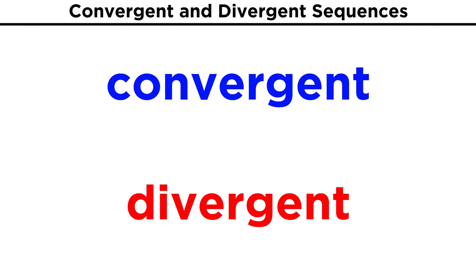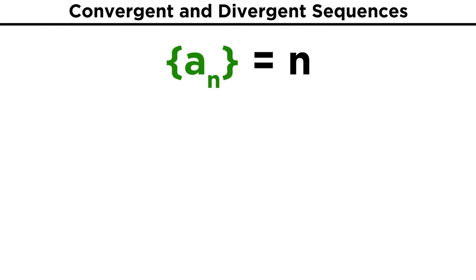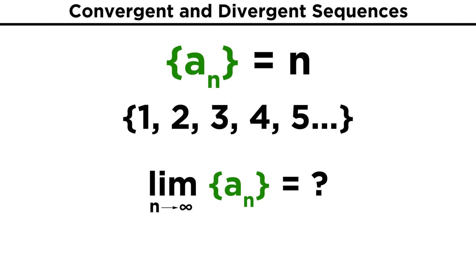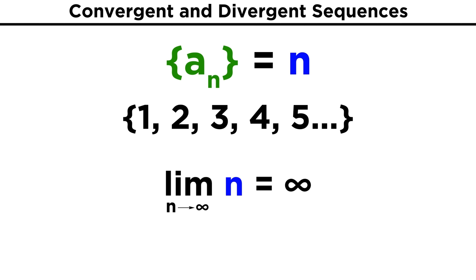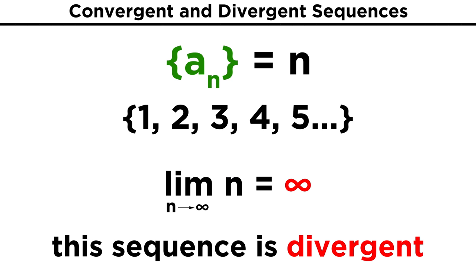First, we want to be able to assess whether a sequence is convergent or divergent, so let's find out what that means. Take the sequence A sub n equals n. That means that the first term is one, then two, and so forth, through the integers. We want to find out what this sequence does in the limit of n approaching infinity. For this one, it's easy to see that the sequence approaches infinity as n approaches infinity, so we would call this sequence divergent, because the limit does not exist.